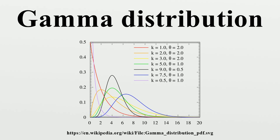Scaling: if x ~ Gamma, then for any c > 0, cx is also gamma distributed. We know that if x is an exponential random variable with rate λ, then cx is an exponential random variable with rate λ/c. The same applies to the gamma distribution. Multiplication by a positive constant c divides the rate parameter.